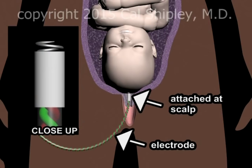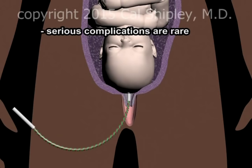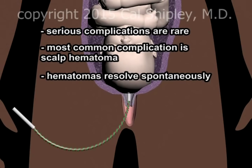Unlike external FHR monitoring, scalp electrodes are considered an invasive technique, as the tip of the coil must pierce the fetal scalp in order to be attached. Serious complications associated with fetal scalp electrodes are rare. Not uncommonly, scalp electrodes may cause bleeding within the scalp, which can cause the formation of a pocket of blood known as a hematoma. While scalp hematomas may be unsightly, they generally resolve spontaneously within several days of birth and cause no further complications.